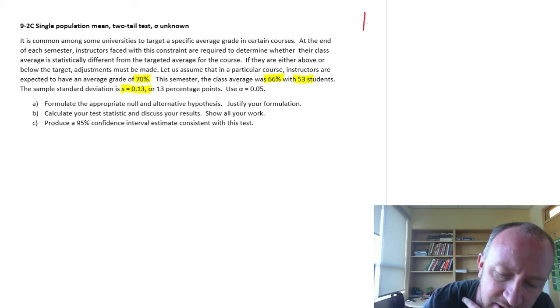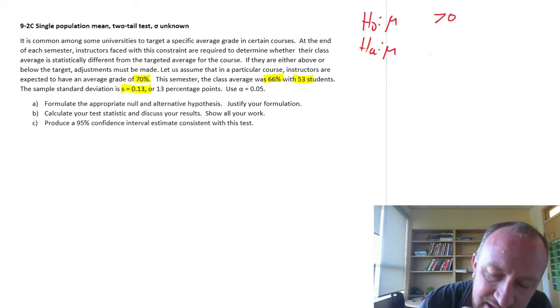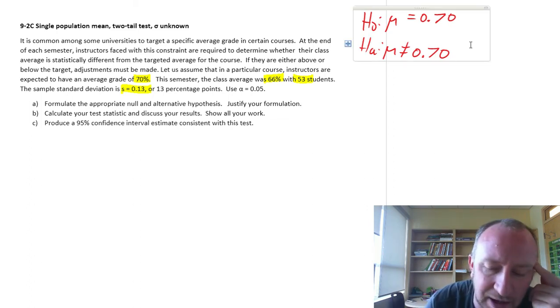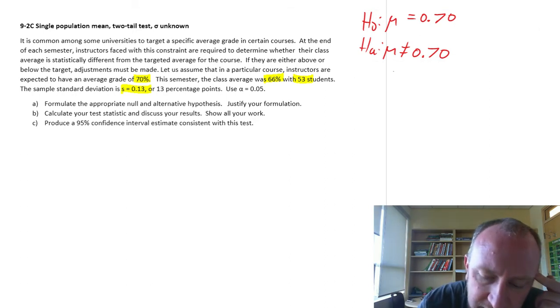So formulate our test. H0, Ha. So here we're testing a population mean. And I want that mean to be 70 and I'm testing to see if it is different from 70. I'm actually going to put this in a decimal because I like working with decimals better than percentages. Less room for error as far as I'm concerned. You can do it either way you like, but I like decimals better.